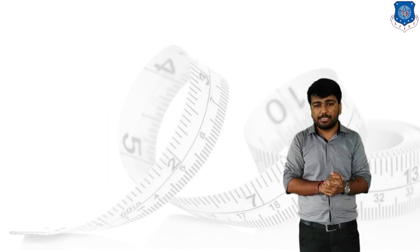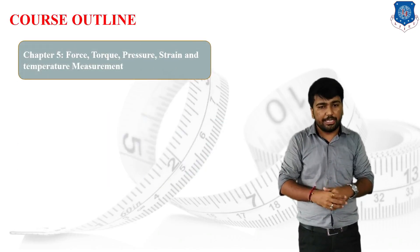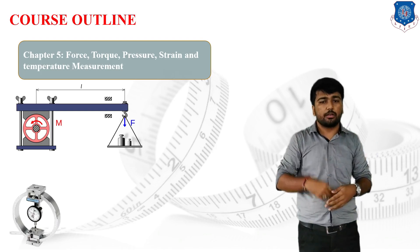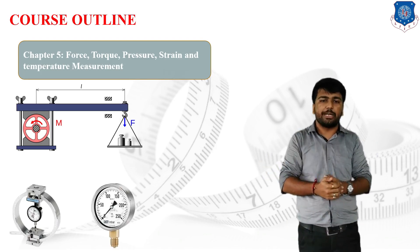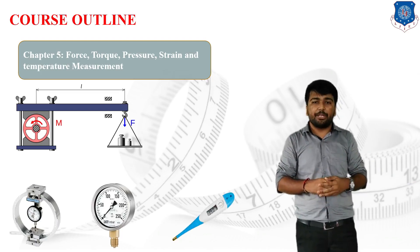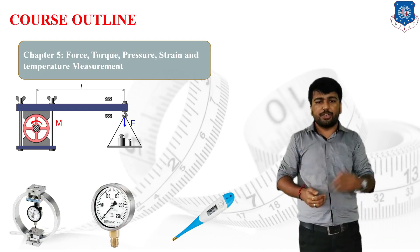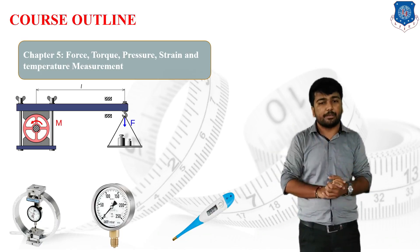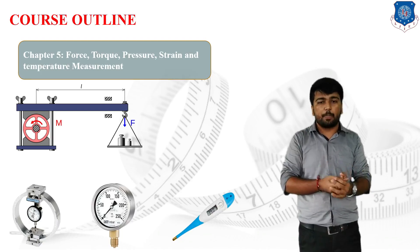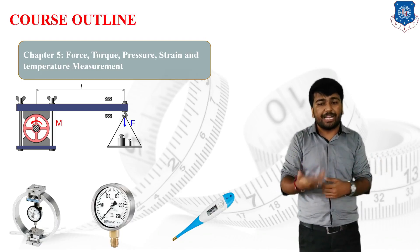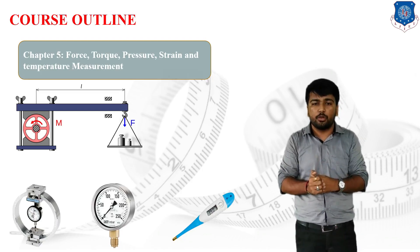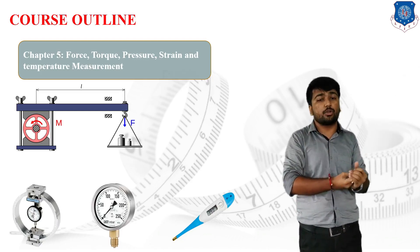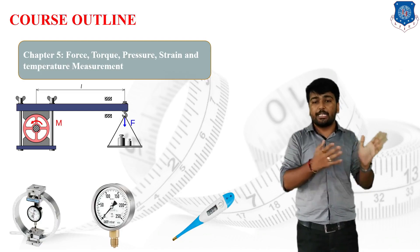The last unit is Unit 5: Force, Torque, Pressure, Strength and Temperature Measurement. We will discuss each parameter, covering machines used in ancient times and those used today, along with advancements in measurement technology. Topics include the Proving Ring, Prony Brake Dynamometer, Pirani Gauge, and pyrometry — the pyrometry concept being useful for temperature measurement beyond 500 degrees Celsius where direct human contact is not physically possible.